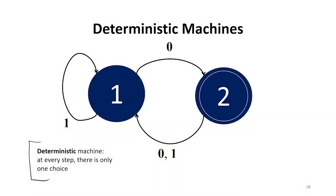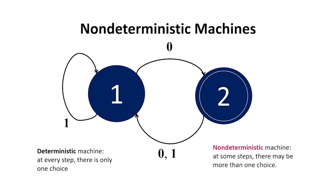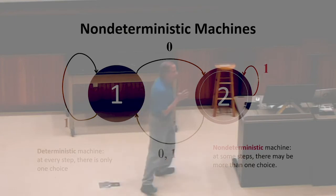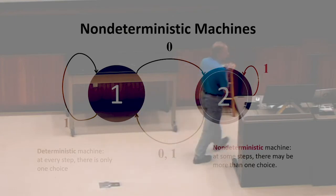What non-deterministic means is we can now have rules that give us options. In the same state on the same input, we can do two different things. For example, in state two if we saw a zero or a one we go to state one, but we can add a rule that says we also stay in state two. So we have two possible things to do on the exact same input starting in the exact same configuration. That's what it means to be non-deterministic.